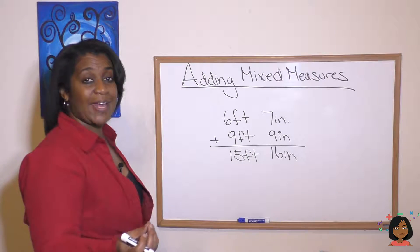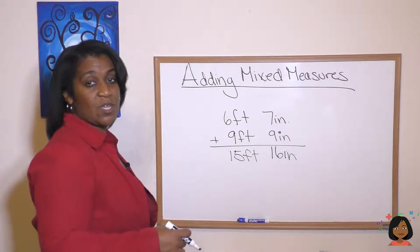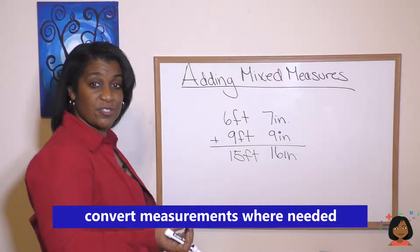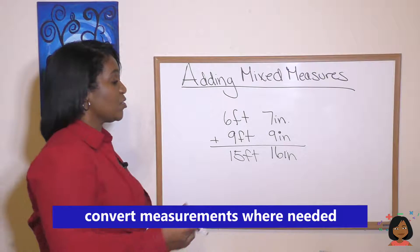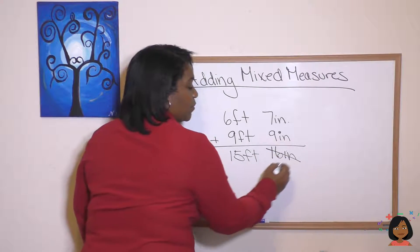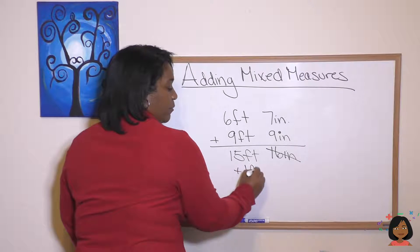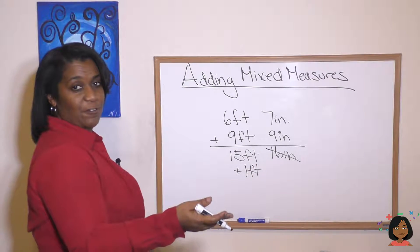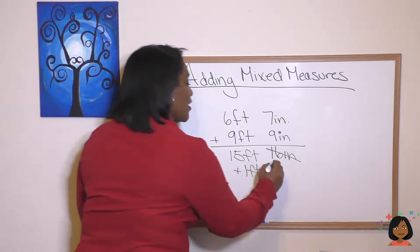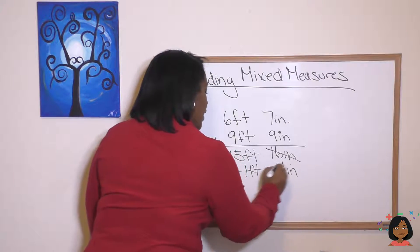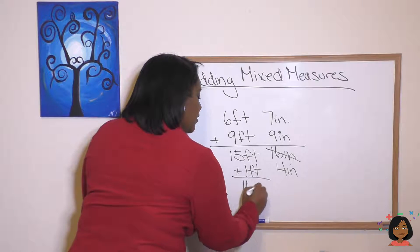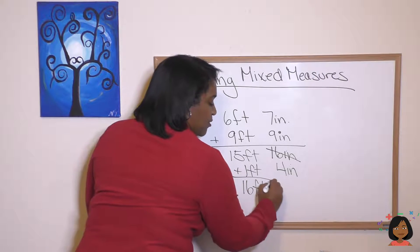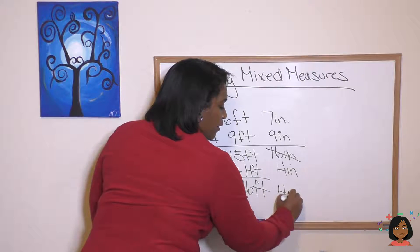Now, we look at our lowest measurement, and we know that we can do some conversions there. We know that 12 inches equals one foot. So, we can cross out this 16. We're going to bring over one foot here, and what's going to be left over? We still have four inches left over. And we add that one foot over here to the 15. We get 16 feet, and I'm just going to bring it down four inches.